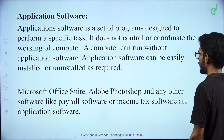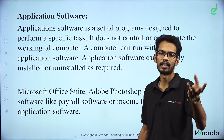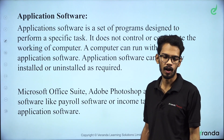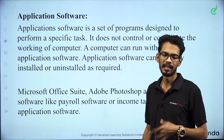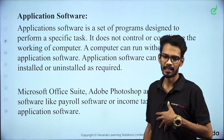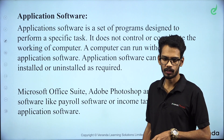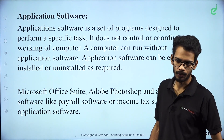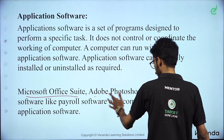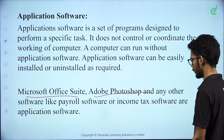A computer can run without application software. But a computer cannot run without system software. System software performs the main task; application software does a specific task. Examples include MS Office and Photoshop.